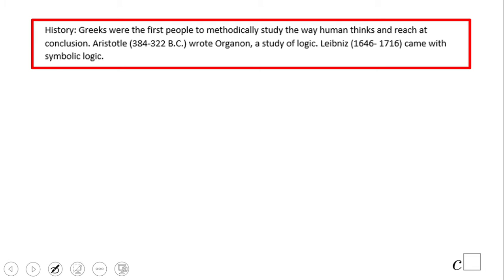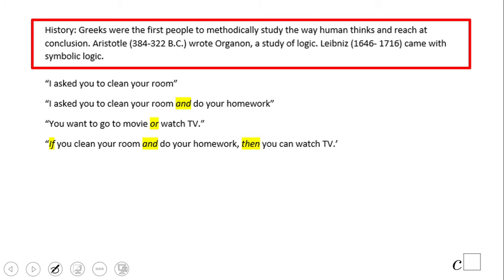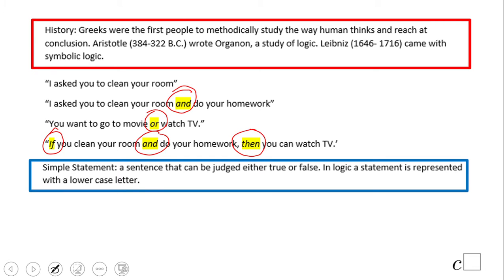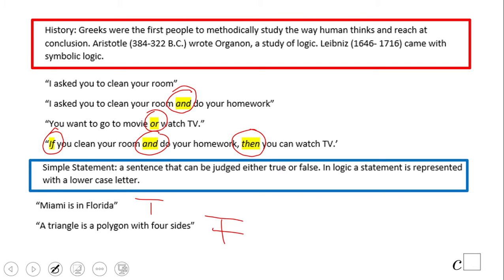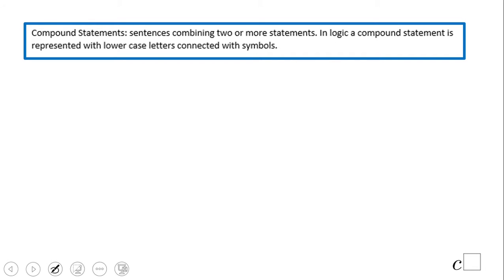You may be familiar with statements like these. I want to highlight some important words which make a difference in any statement. A simple statement is a sentence that can be true or false. For example, 'Miami is in Florida' is a true statement, and 'a triangle is a polygon with four sides' is false.